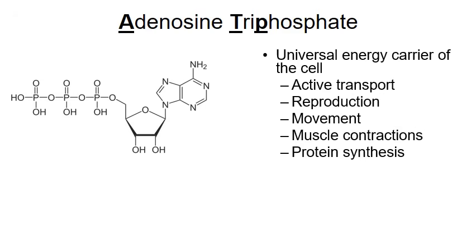ATP is often compared to money or the currency of the cell — we spend money on goods and services, and the cell will spend ATP to perform reactions. Here's the triphosphate part: notice how there are three phosphates, and in the bonds between the second and third phosphate is energy.